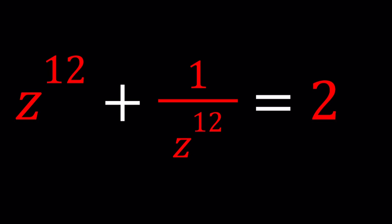Hello everyone. Welcome to A plus B I. This channel is all about complex numbers and in this video we're going to be solving an equation with complex numbers. We have z to the power 12 plus 1 over z to the power 12 is equal to 2 and we're going to be solving for z values.